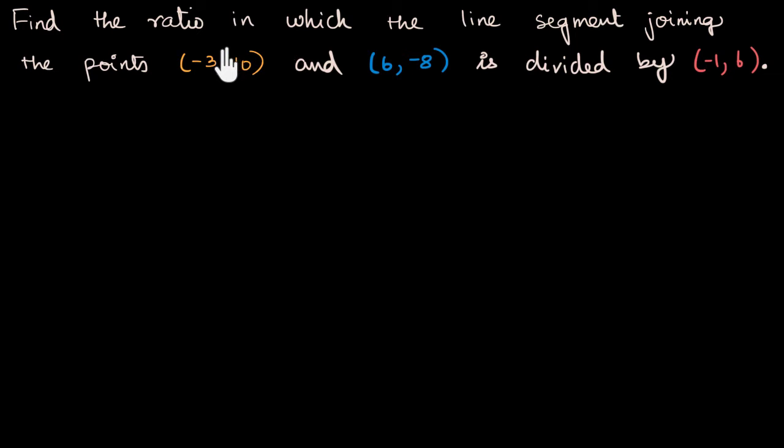There is some line segment that joins these two points. This point divides that line segment. We have to find what is the ratio in which it divides it.